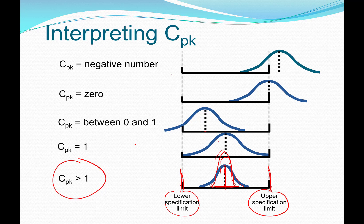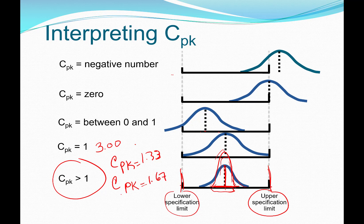A C sub p k equal to one is referred to as the process being capable within three standard deviations. A C sub p k of 1.33 is capable within four sigma. A C sub p k of 1.67 is capable within five sigma. And a C sub p k of 2 is associated with six sigma quality — capable within six standard deviations.